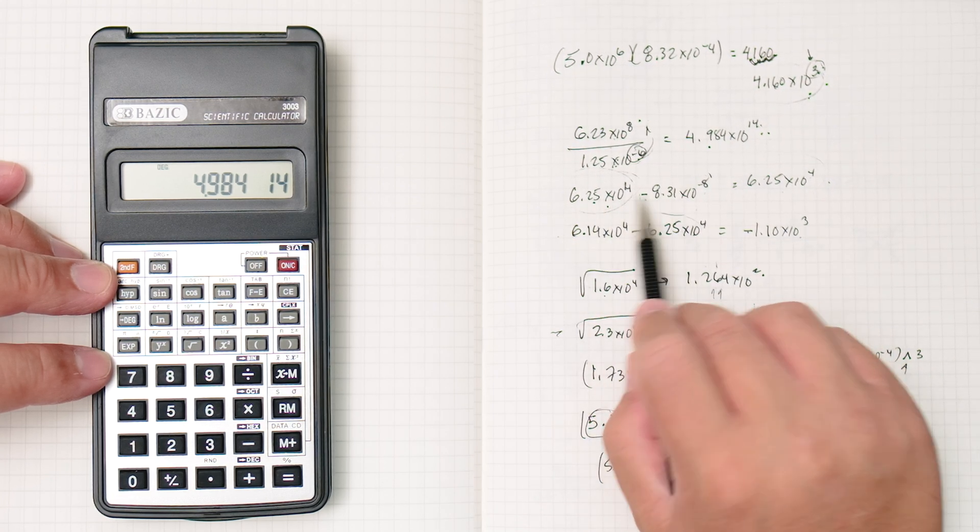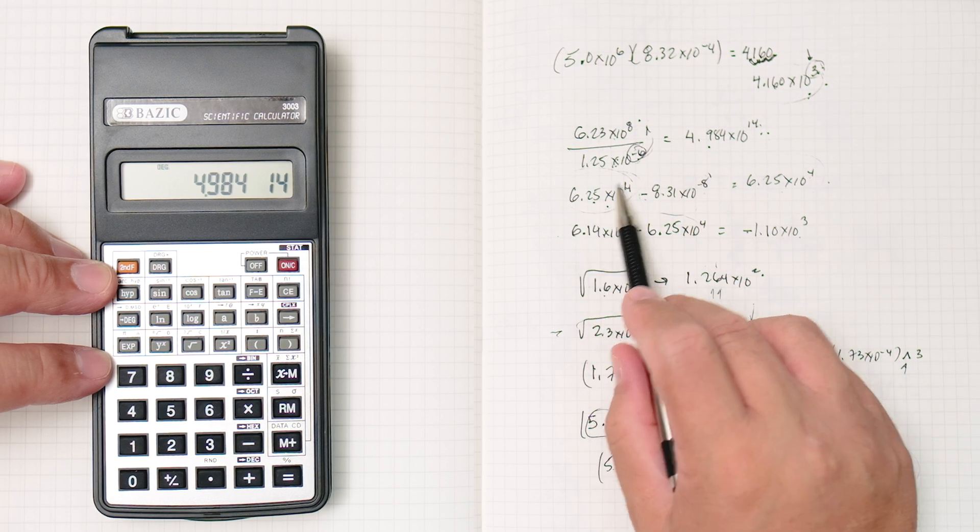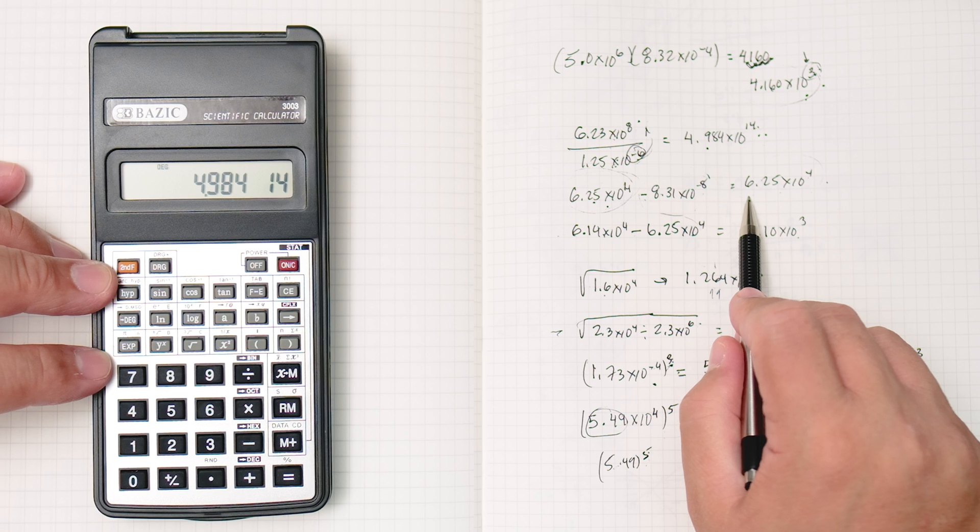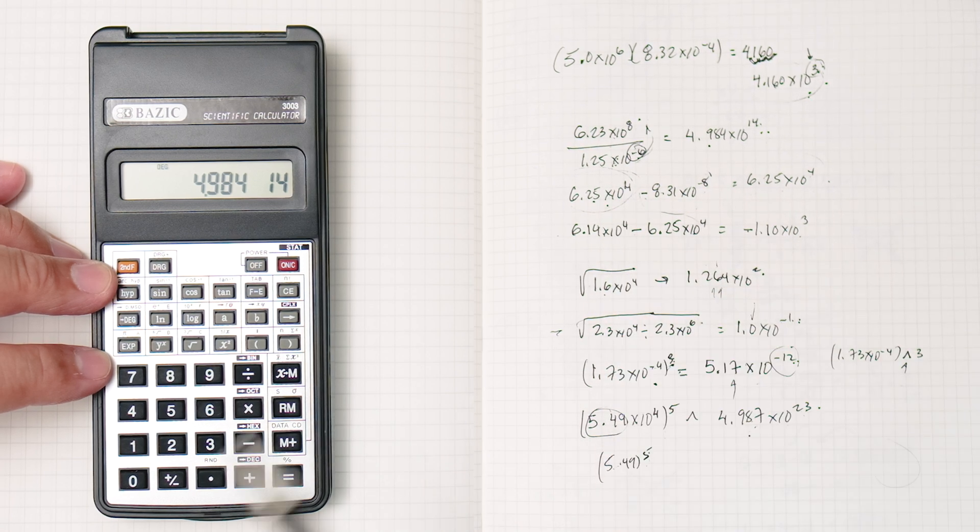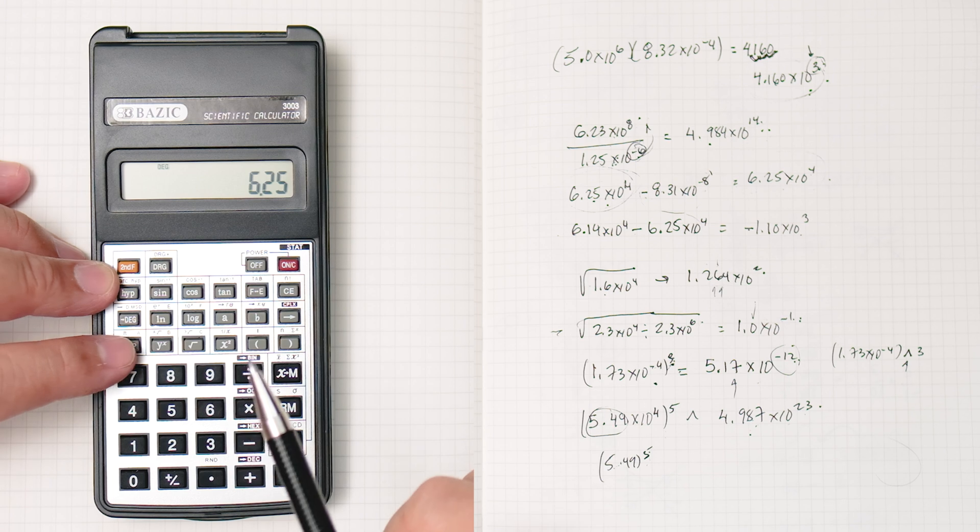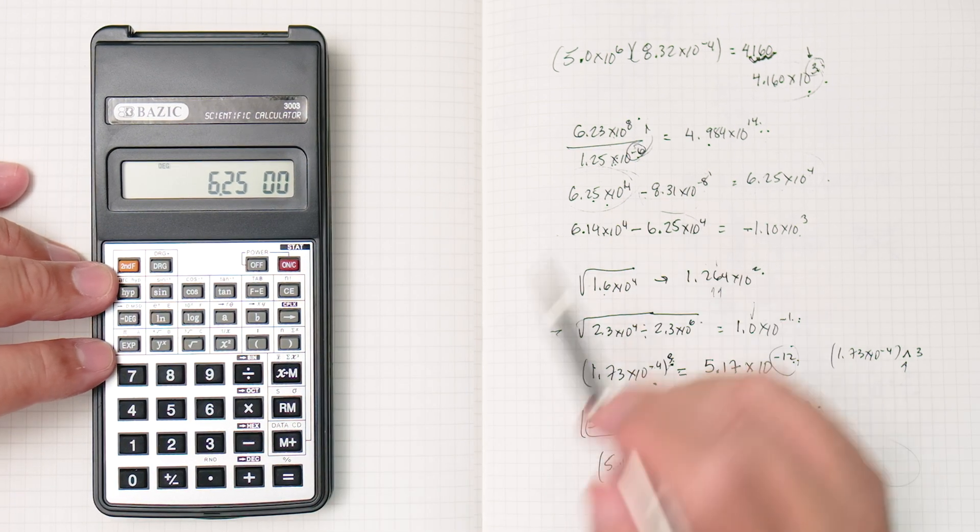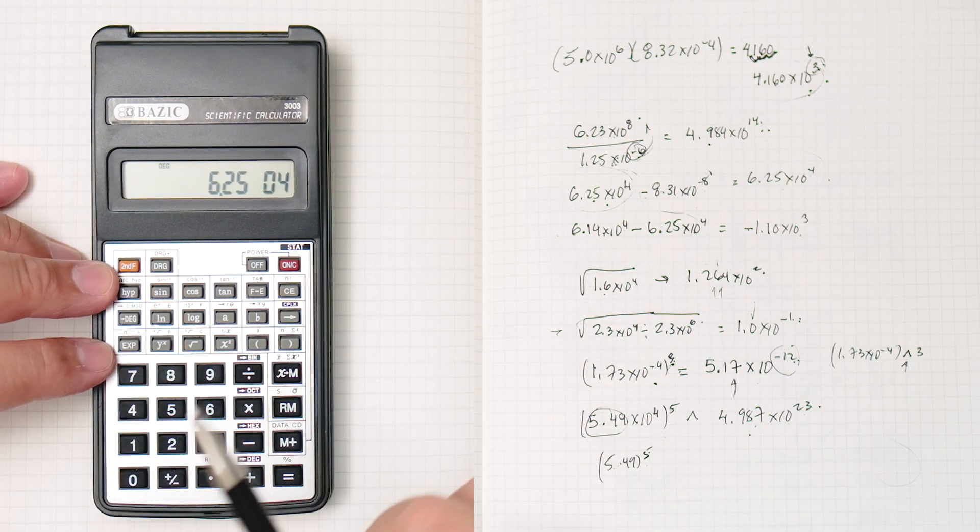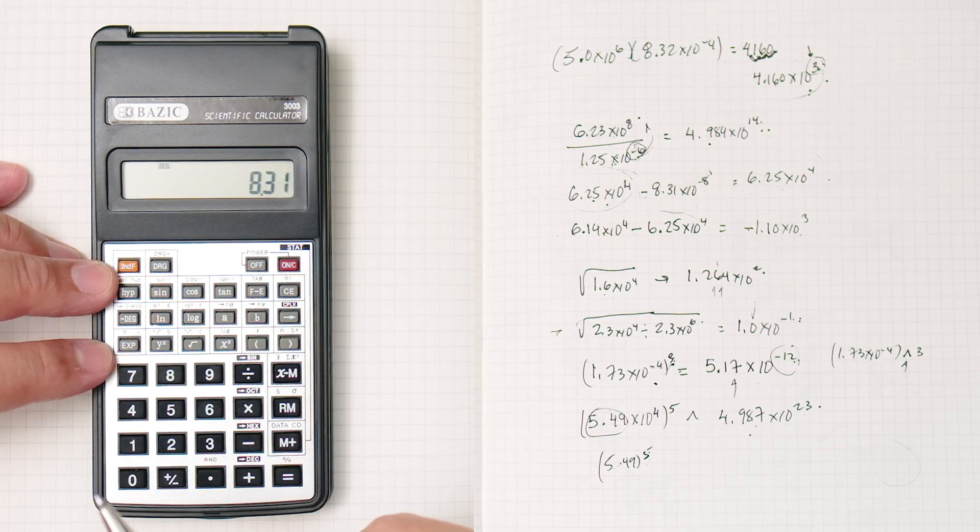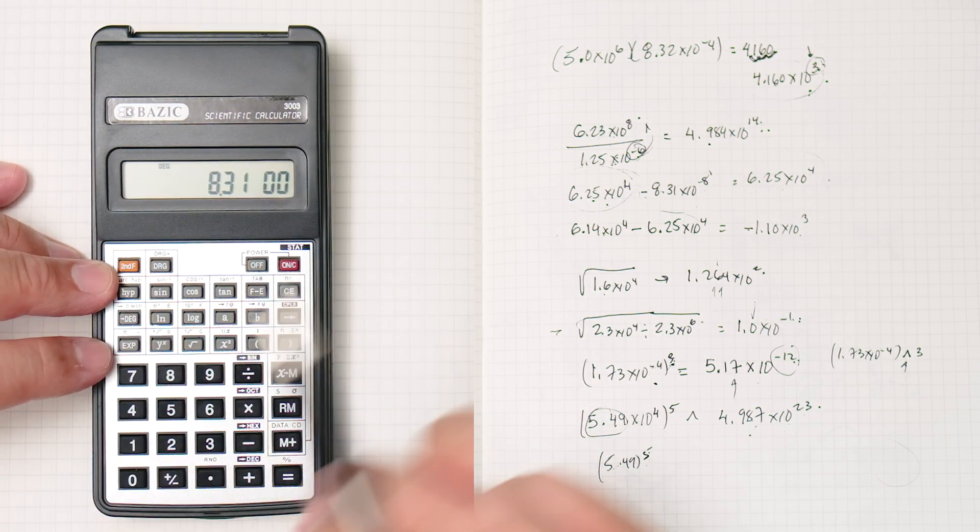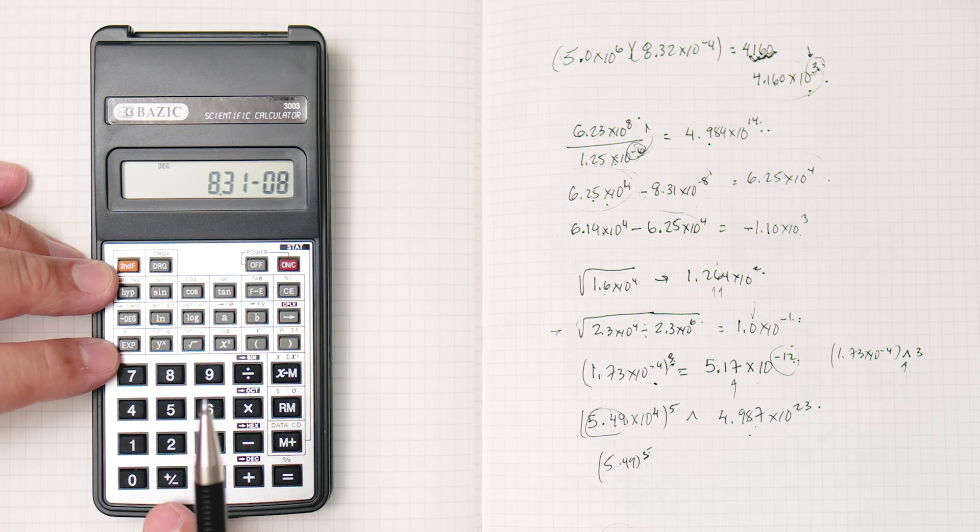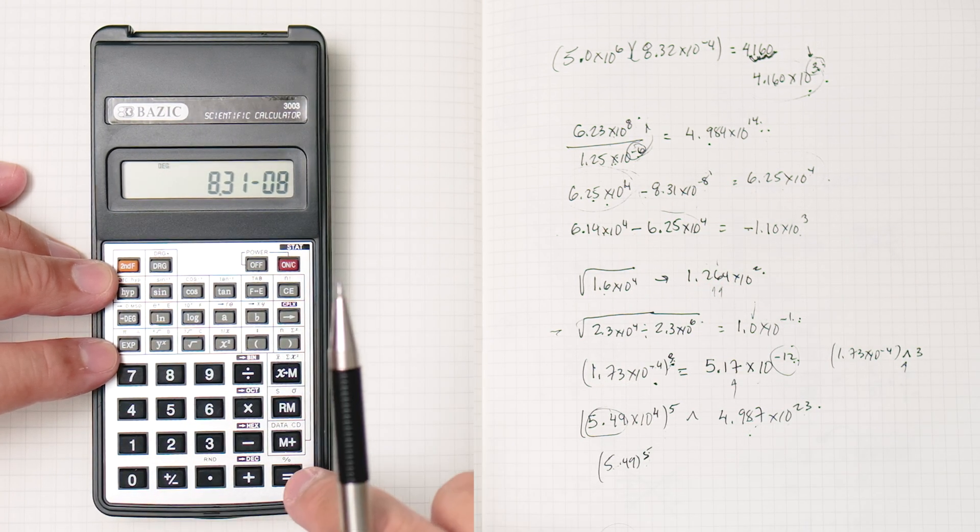Let's do these two right here. This is a big number, this is a small number, subtract a tiny number from a big number, it doesn't make a difference. And you can see it's the same answer, but we'll do it anyway. 6.25 exponent, times 10 to the 4th, subtract 8.31, to the power, or times 10 to the negative 8, this negative right here. Enter.